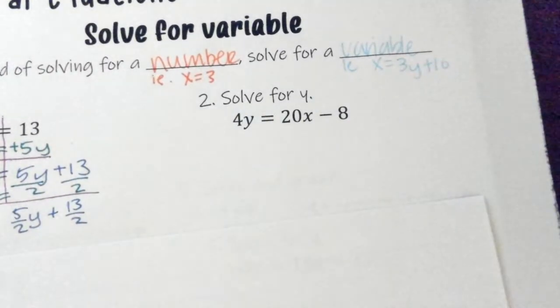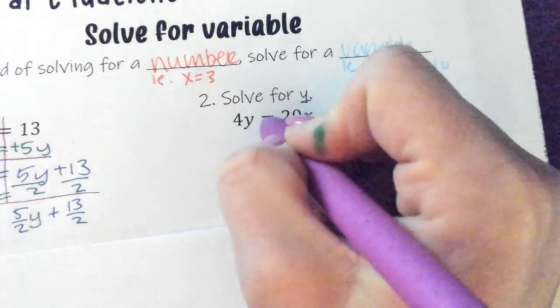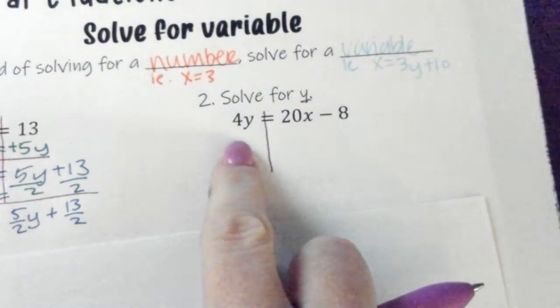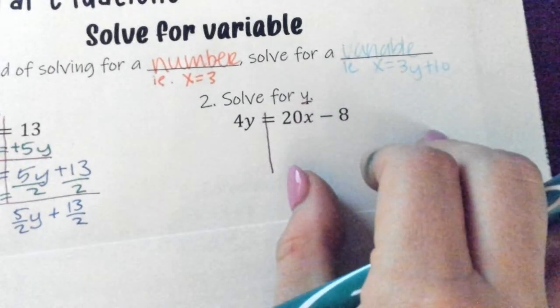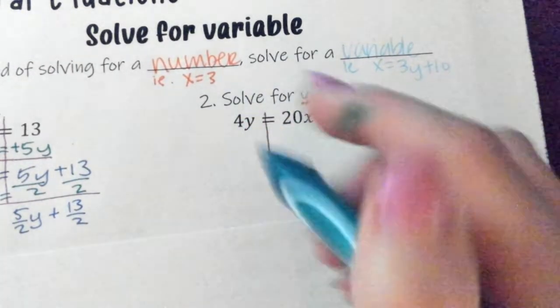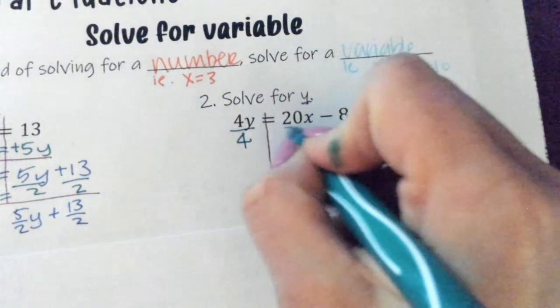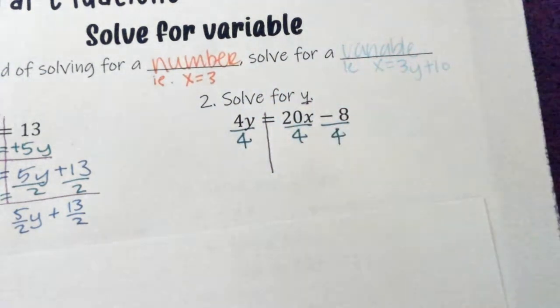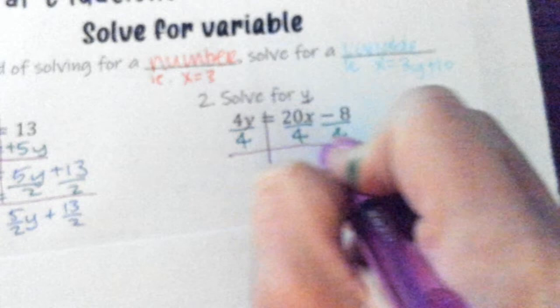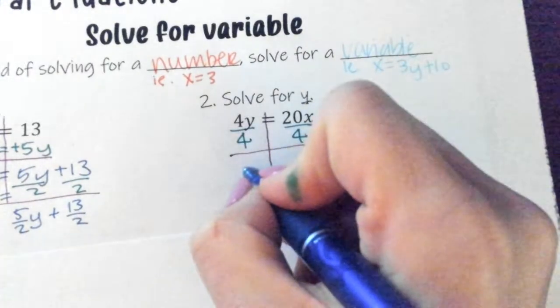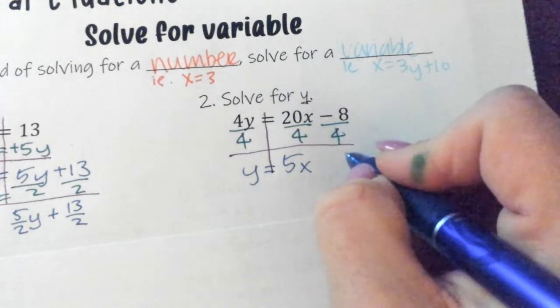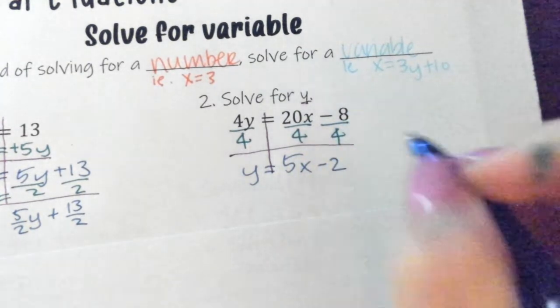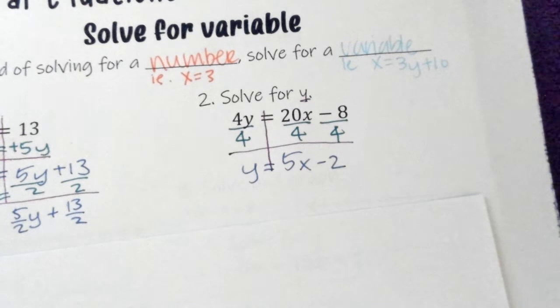Same thing. Solve for y this time, meaning we want to get y by itself. Right now it's being multiplied. Everything else is already on this right-hand side, so all I need to do is move that 4. I'm doing my inverse operation and dividing everything by 4. Then we've got y equals 20 divided by 4 is 5, so 5x. Negative 8 divided by 4 is a negative 2. So y equals 5x minus 2.